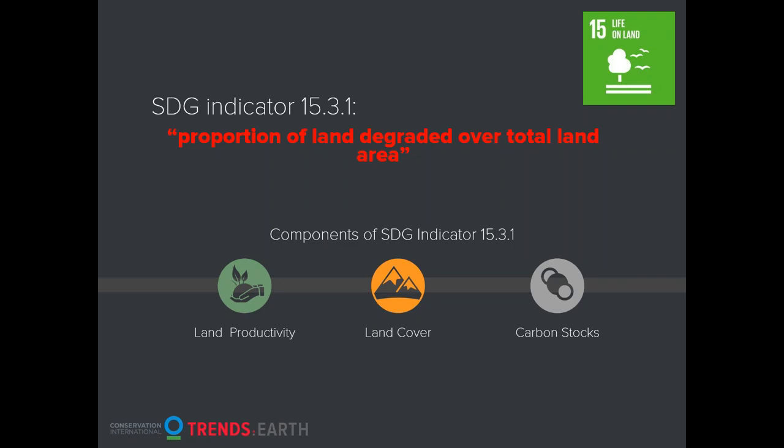SDG 15.3.1 requires the estimation of changes in land productivity, land cover, and soil organic carbon spatially to identify areas that are degraded in each of these sub-indicators, and then integrating the three of them into the final SDG. Trends.Earth allows you to do this in a very simple, systematic way, easy to replicate in different geographies and time periods, with methods that are replicable and scientifically valid.